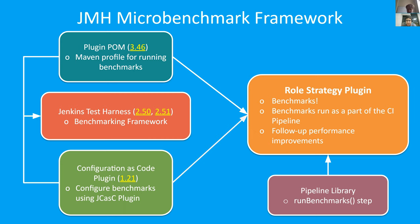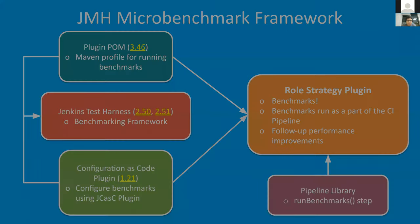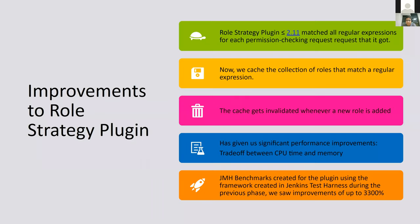We have a profile in the plugin POM which gets inherited to the plugin. For example, we had benchmarks in the Role Strategy plugin which are run as part of the CI pipeline, and we started improving performance from there. These benchmarks on the ci.jenkins.io instance are run using the run-benchmark step added to the pipeline library, and we added the ability to use Configuration as Code to set up the instances started for the benchmarks.